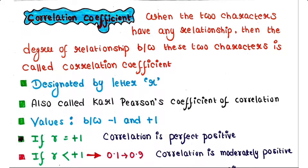Now let's define correlation coefficient. When two characters have any kind of relationship, the degree of that relationship between the two characters is called the correlation coefficient. This means any kind of relationship between two characters can be expressed quantitatively by the correlation coefficient.